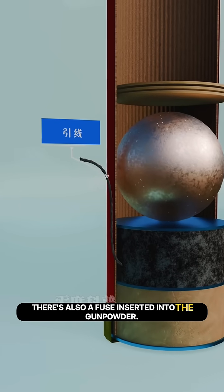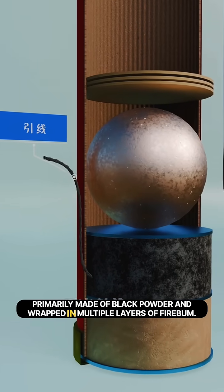There's also a fuse inserted into the gunpowder, primarily made of black powder and wrapped in multiple layers of fiber.